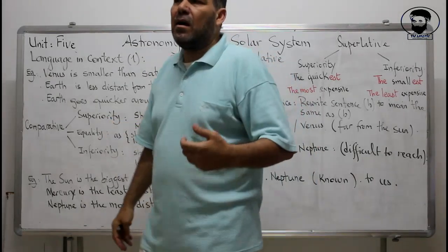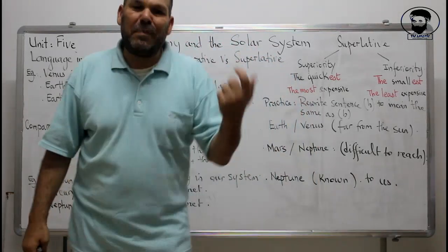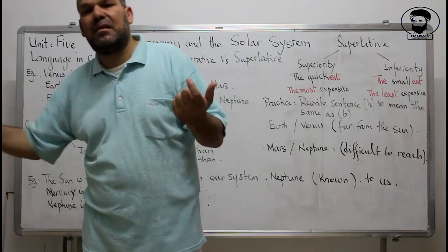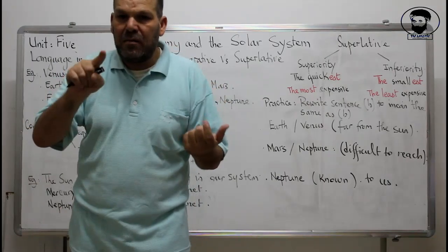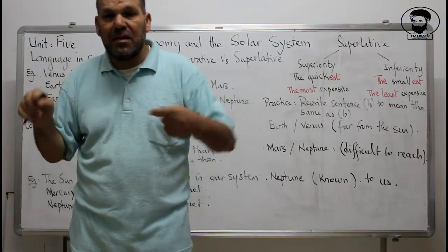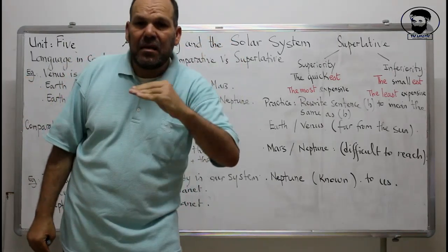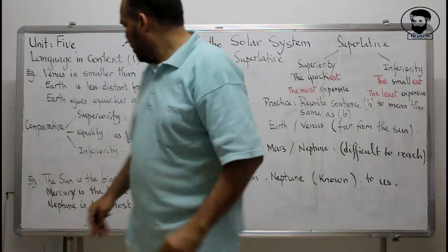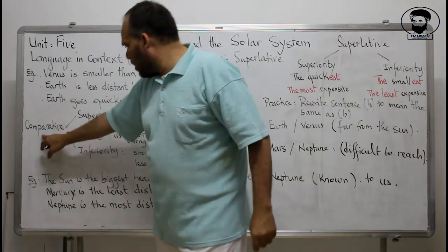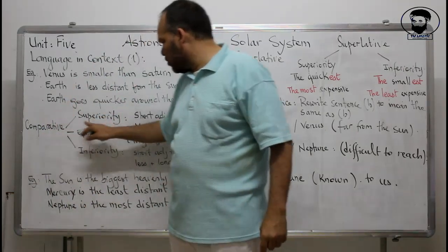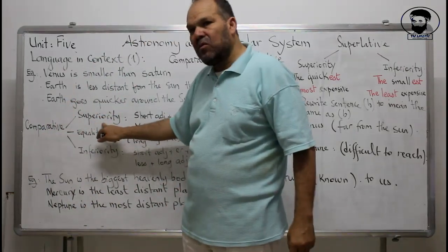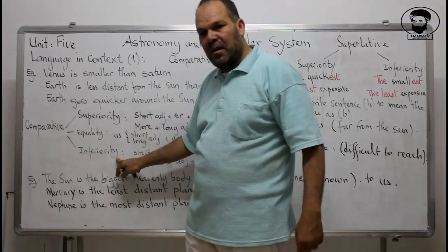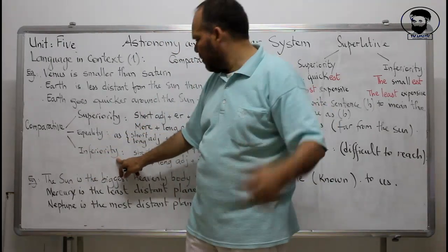For comparison we have three types: superiority, equality, and inferiority. For superiority the adjective needs to be positive, for inferiority it expresses something negative or lesser, and for equality the two things being compared are at the same level.